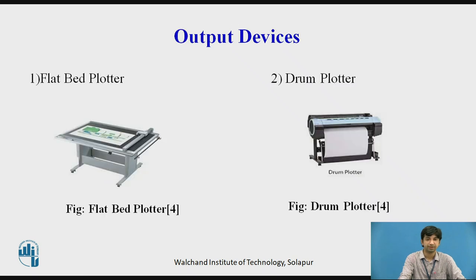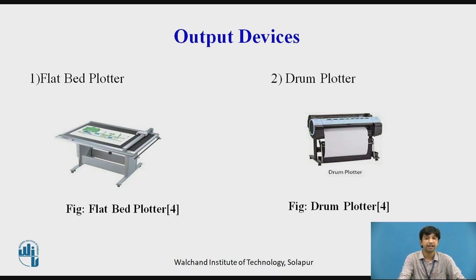Output devices are devices which show output to the user — for example, a printer. We will be discussing the plotter as an output device. A plotter is a printer designed for printing vector graphics. Instead of printing individual dots on paper, a plotter draws continuous lines. This makes plotters ideal for printing architectural blueprints, engineering designs, and other CAD drawings.